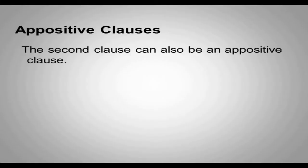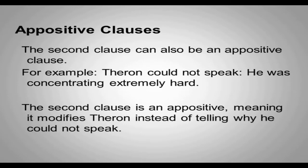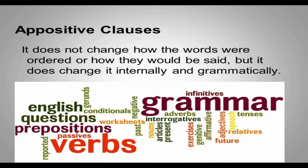Grammar geek side note here: technically, the second clause can also be an appositive clause. For example, "Theron could not speak: he was concentrating extremely hard." The second clause is an appositive, meaning it's modifying Theron instead of telling why he could not speak. It does not change how the words were ordered or how they would be said, but does change it internally and grammatically. This is why people go insane from grammar every day.